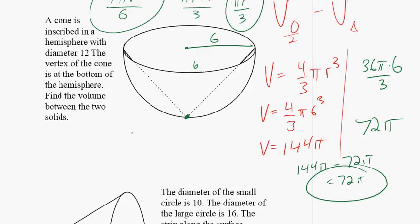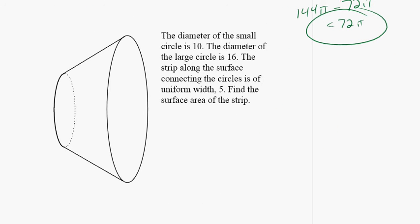Let's take a look at the second one. Diameter of the small circle is 10. Diameter of the large circle is 16. The strip along the surface connects the circles. The strip along the surface connecting the circles is of uniform width 5. So connecting the circles is this length right here. So this is 5. This is 5. It's uniform width. Find the surface area of the strip.